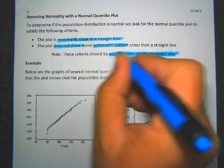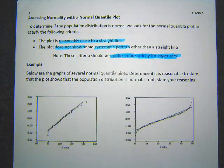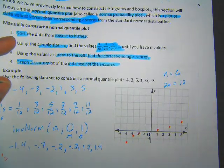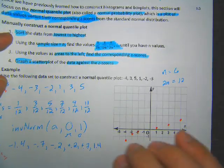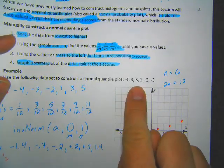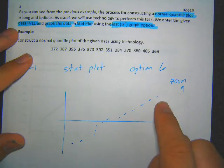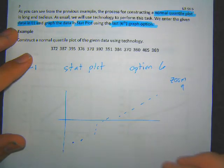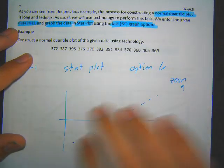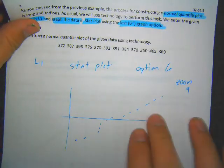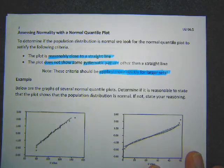Note that these criteria are applied more strictly for larger datasets. The bigger your set of data, the more it should look like a straight line. For the first example with very few data points, I'm not going to worry much if it looks a bit curvy — it doesn't have to be super perfect. But the second set with 12 numbers I'll be a little stricter. With a hundred or a thousand numbers I'd want it to be very straight.